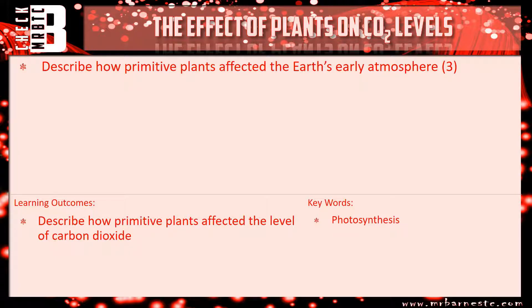So, describe how primitive plants affected the Earth's early atmosphere. It's really important to name the process — you get one mark for saying photosynthesis occurred, or that plants photosynthesized.